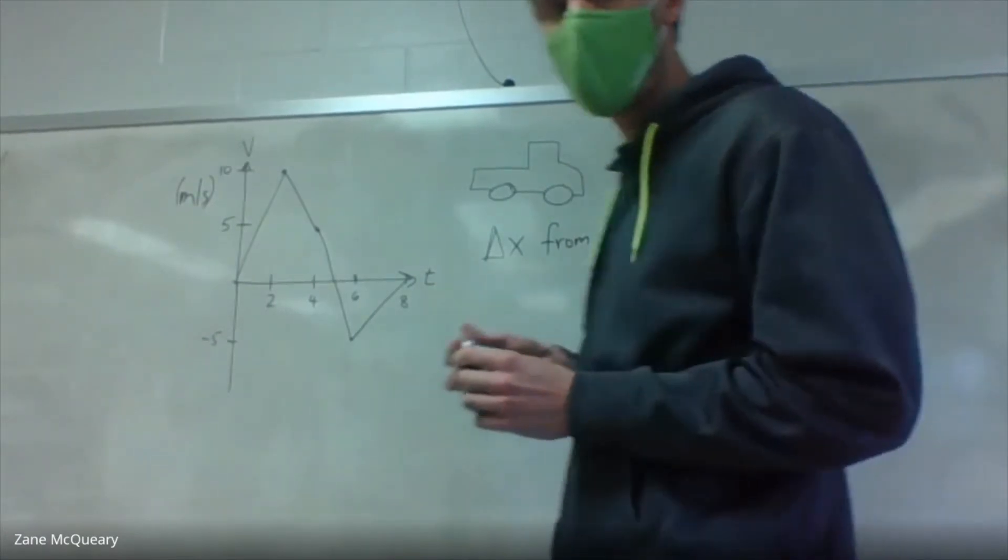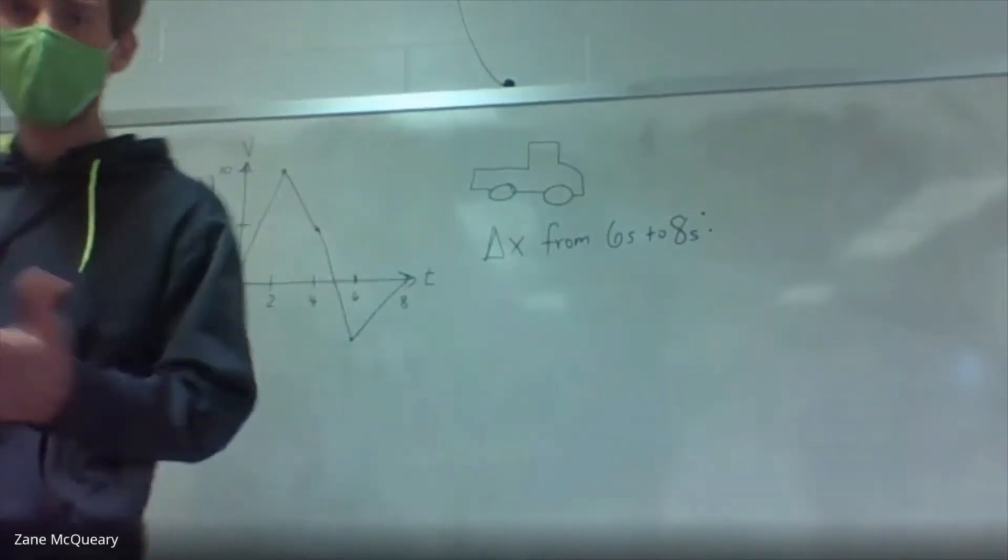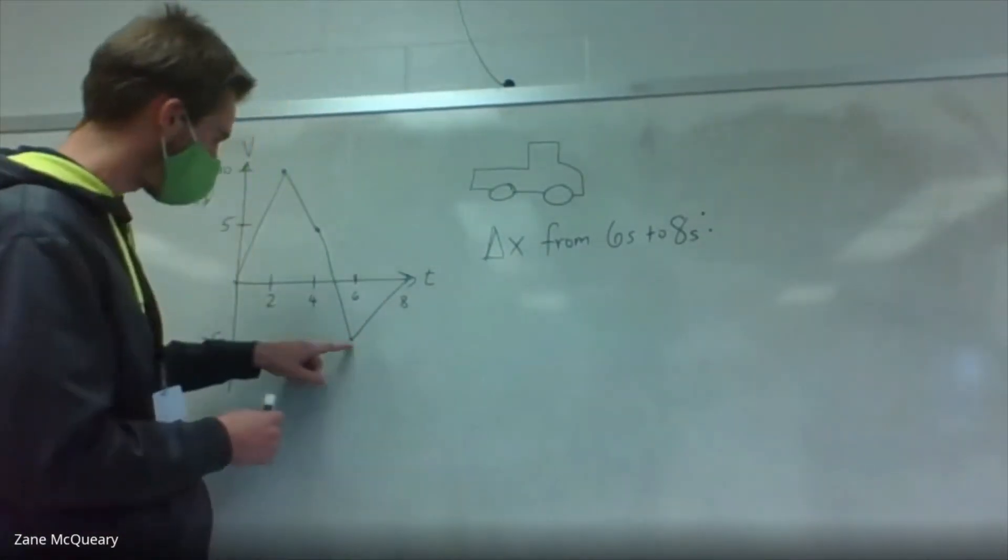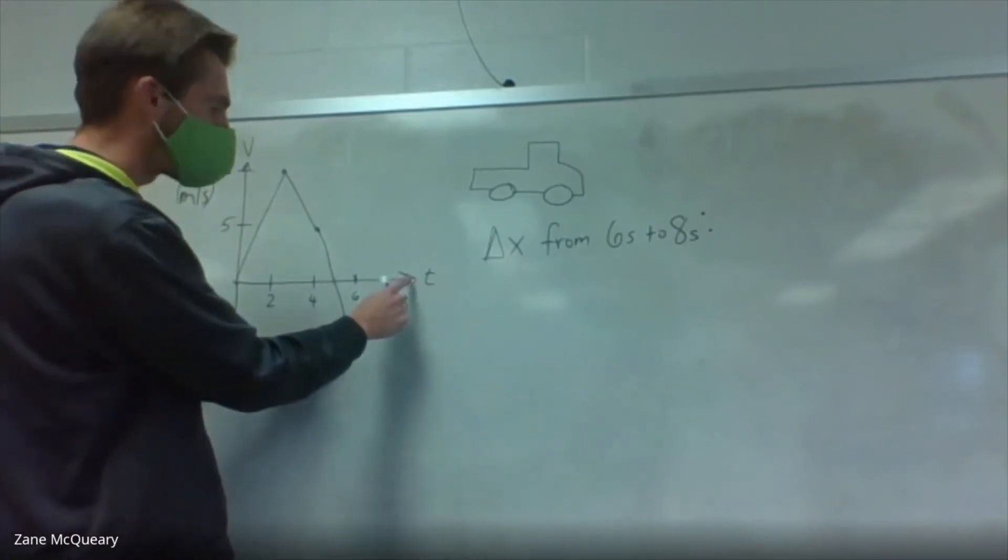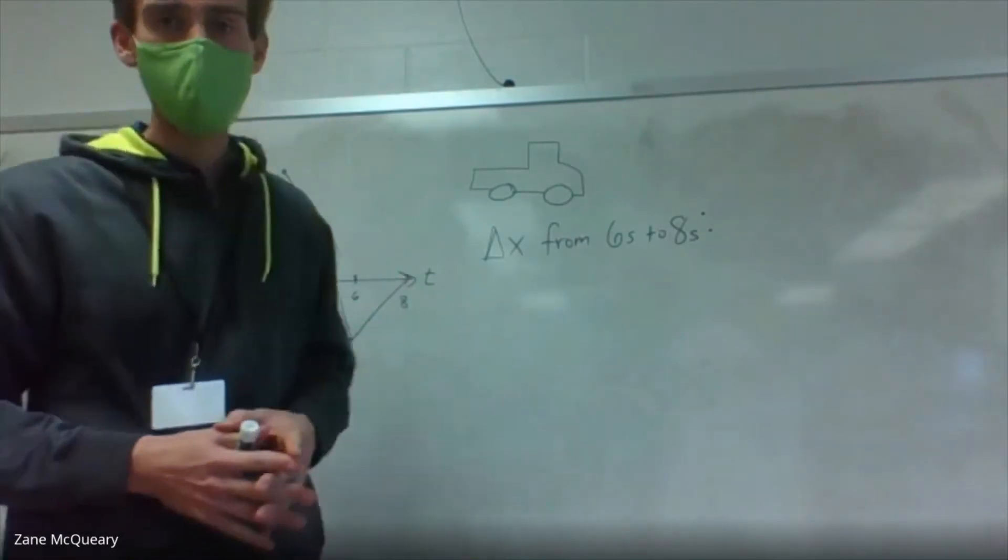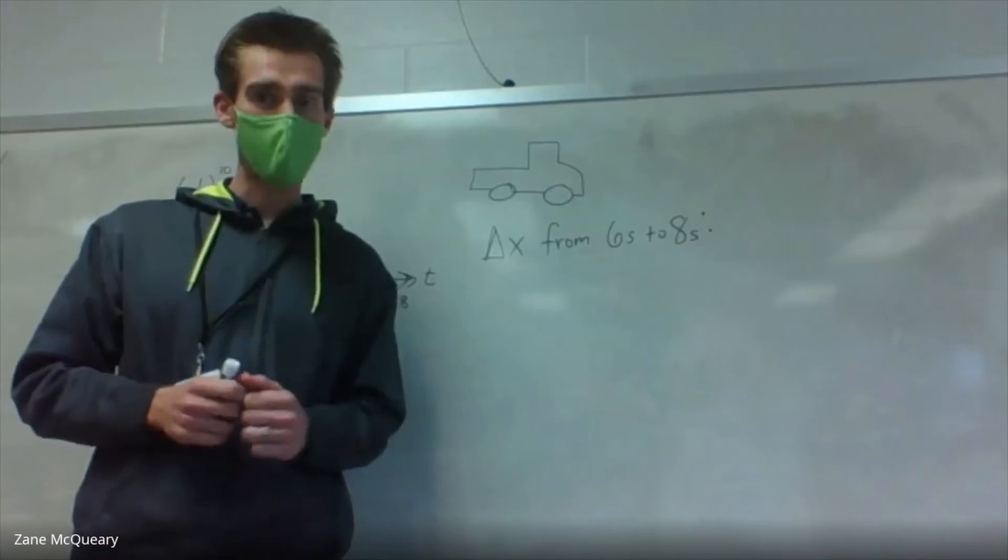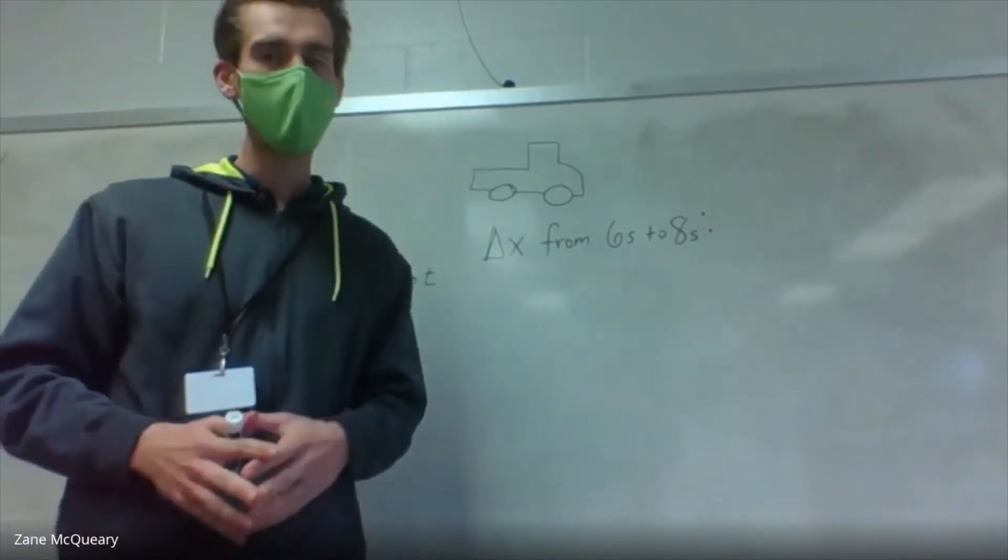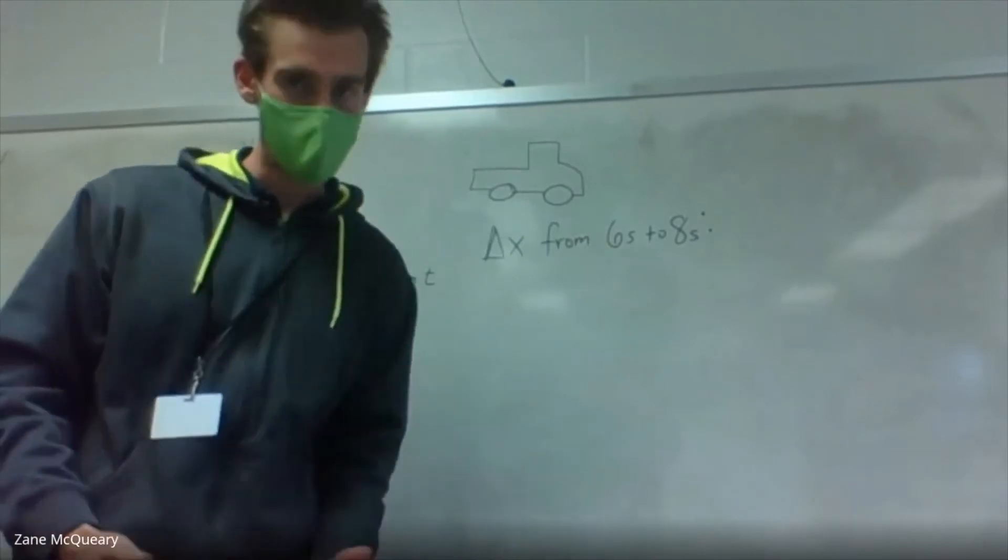So when we had a position versus time graph, we could just look at those two points and say, okay, we've traveled this far. We started here at negative five, we went to zero. Oh, look, we've gone five, but that's not the case with velocity versus time. You're not looking at where something is positioned. You're looking at how fast something is traveling.